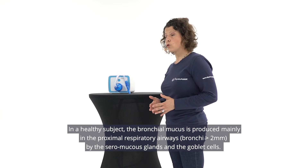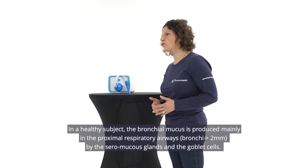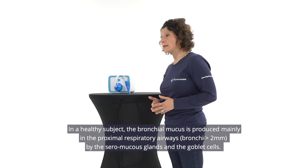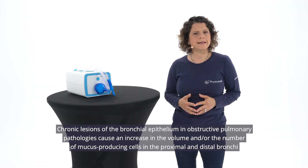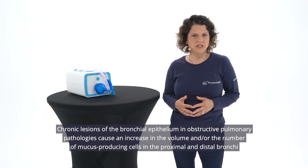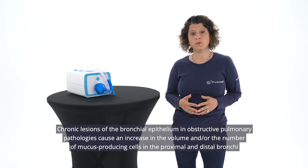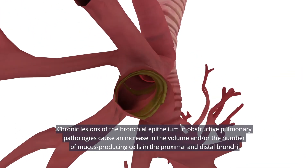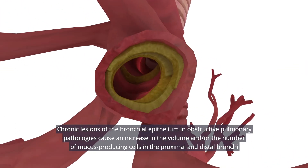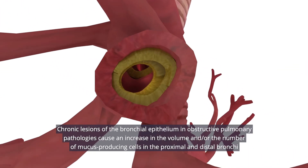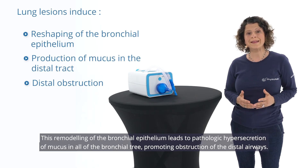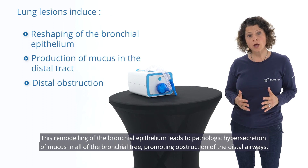In a healthy subject, the bronchial mucus is produced mainly in the proximal respiratory airways by the seromucus glands and the goblet cells. Chronic lesions of the bronchial epithelium in obstructive pulmonary pathologies cause an increase in the volume and/or the number of mucus-producing cells in the proximal and distal bronchi. This remodeling of the bronchial epithelium leads to pathologic hypersecretion of mucus in all of the bronchial tree, promoting obstruction of the distal airways.